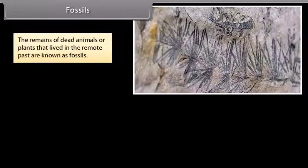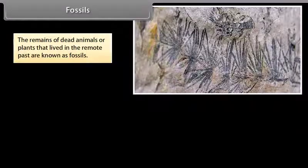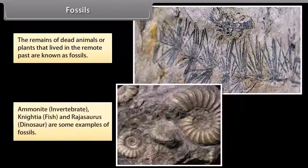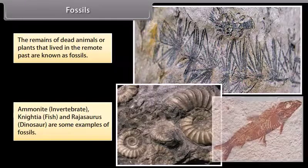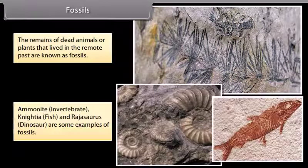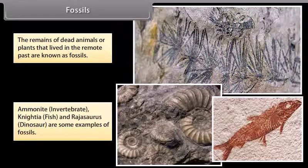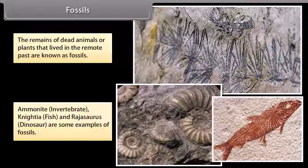Fossils: The remains of dead animals or plants that lived in the remote past are known as fossils. Ammonite invertebrate, Nicaea fish, and Rajasaurus dinosaur are some examples of fossils.